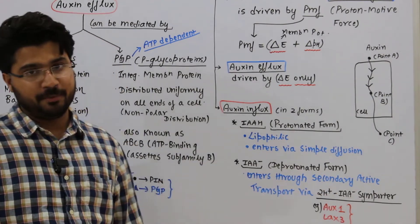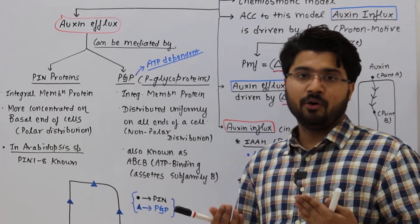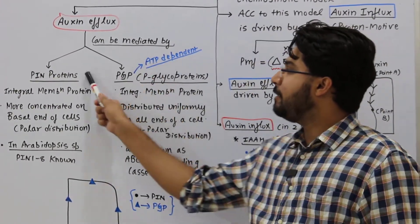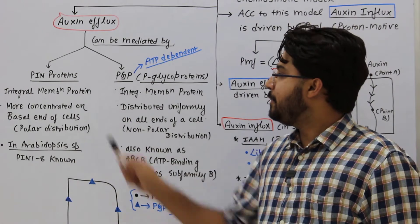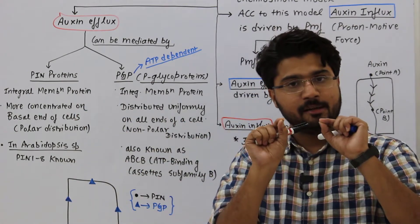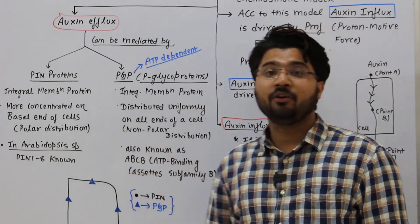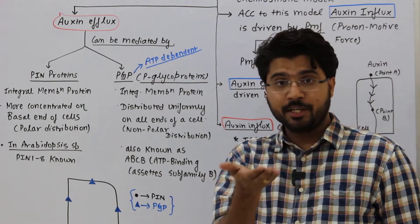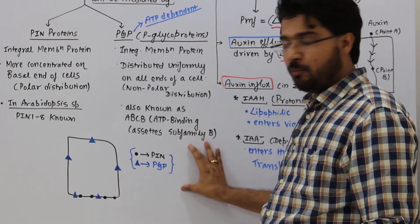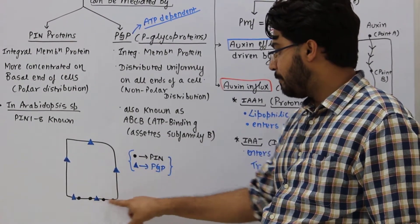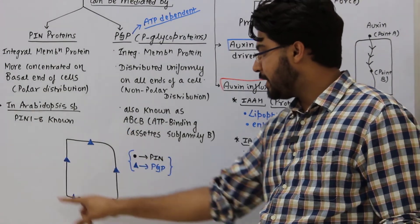Auxin efflux — how IAA exits a cell — is mediated by two types of protein: PIN protein and PGP protein. Both PIN and PGP are integral membrane proteins embedded in the plasma membrane. PIN proteins are more concentrated on the basal end of each cell, not on the apical side. The figure shows PIN proteins (black dots) concentrated at the base of each cell.